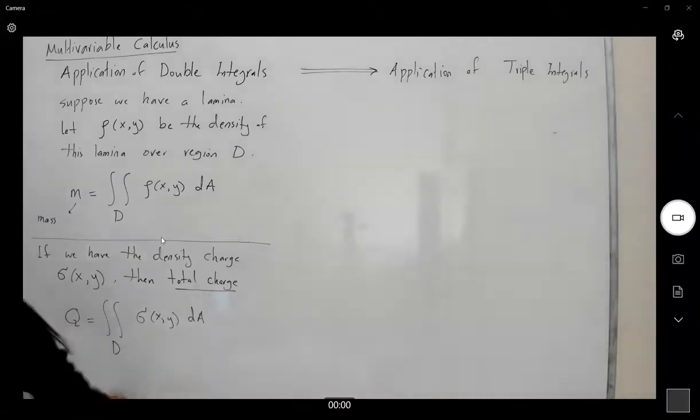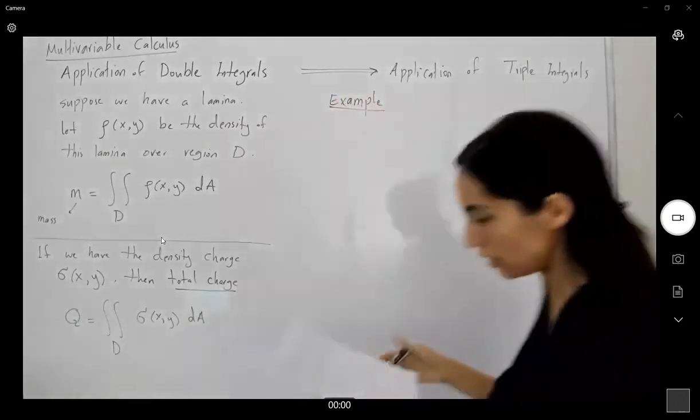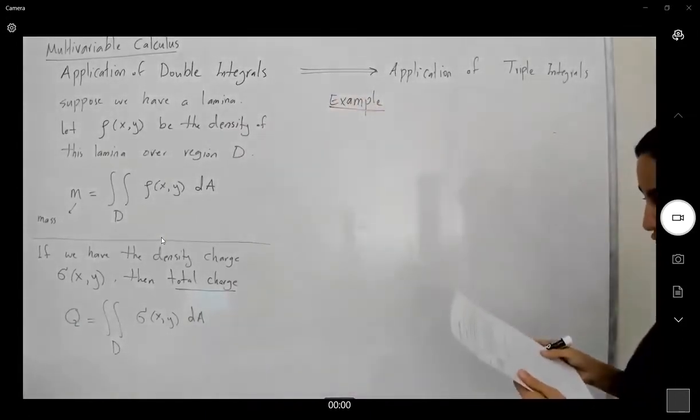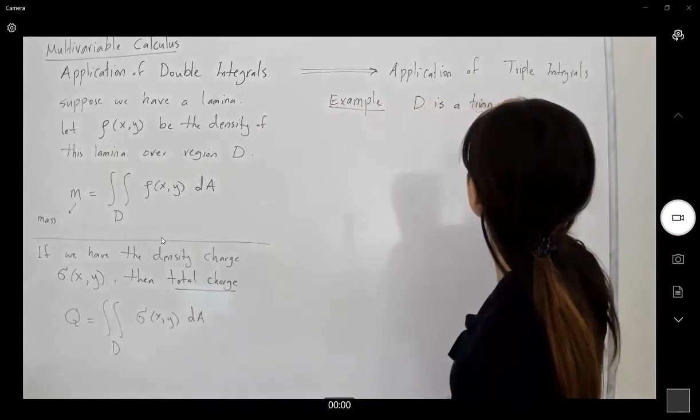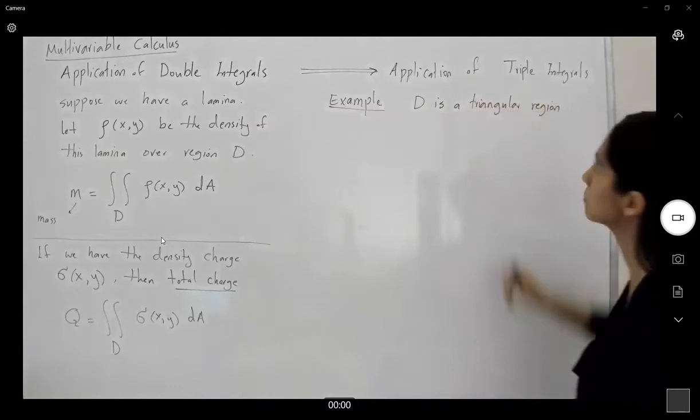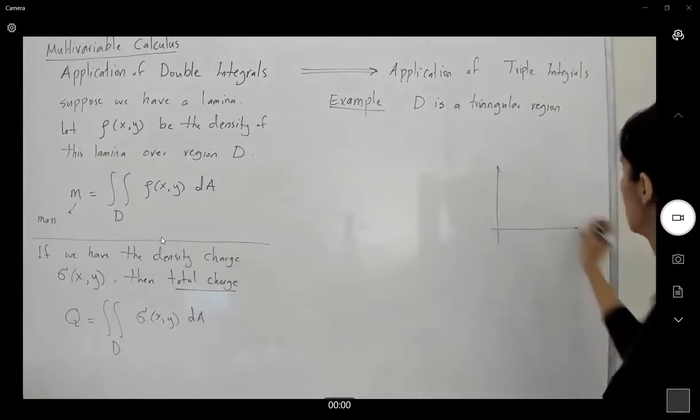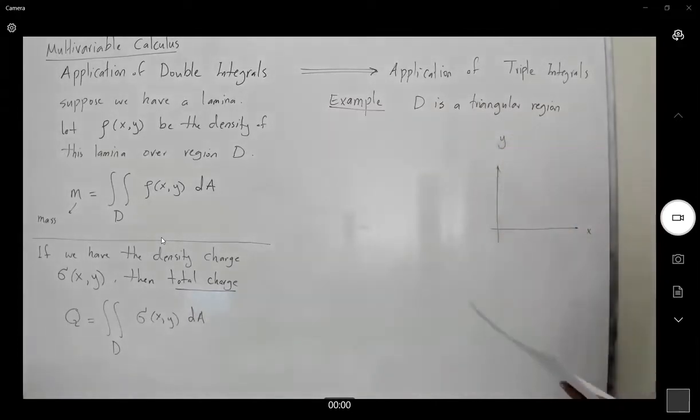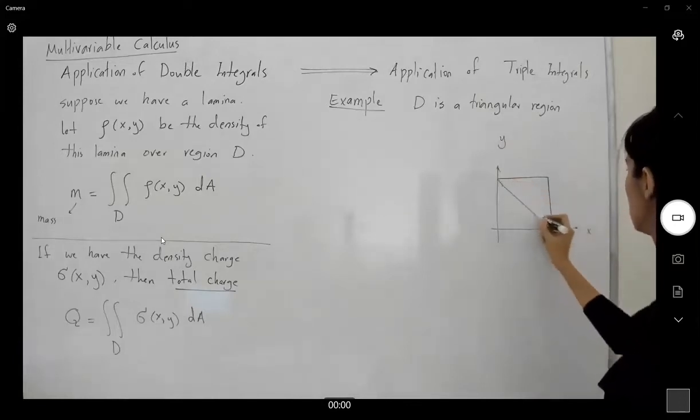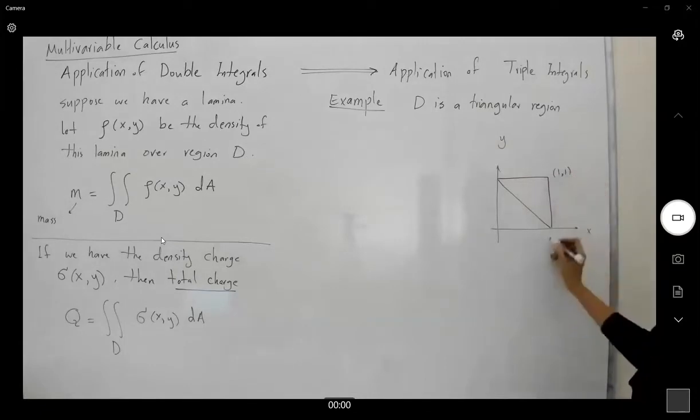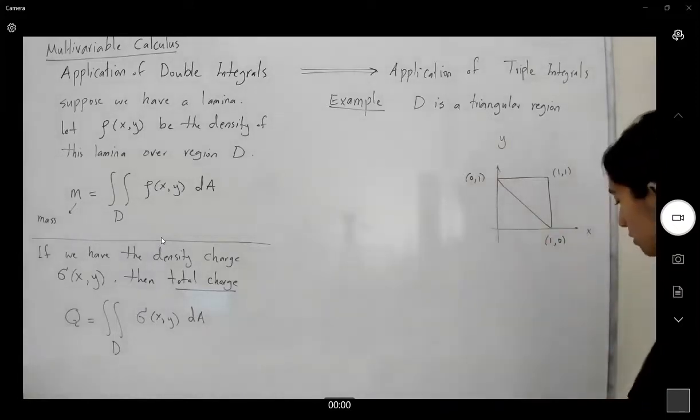Let's go over one example. This example says, well, here we have a charge distributed over triangular region D. So D is a triangular region. And it's given as follows. So this is your D. This is your x axis. This is your y axis. And you know that this is a triangular region. Here we go. (1,1), (1,0), (0,1). There we go. So as you can see, for region D, which is here.